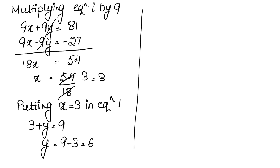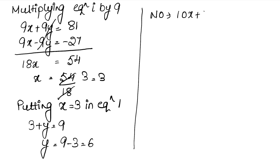Our number was 10x plus y. With x equals 3 and y equals 6, the number is 10 times 3 plus 6, which equals 30 plus 6, that is 36 is the answer.